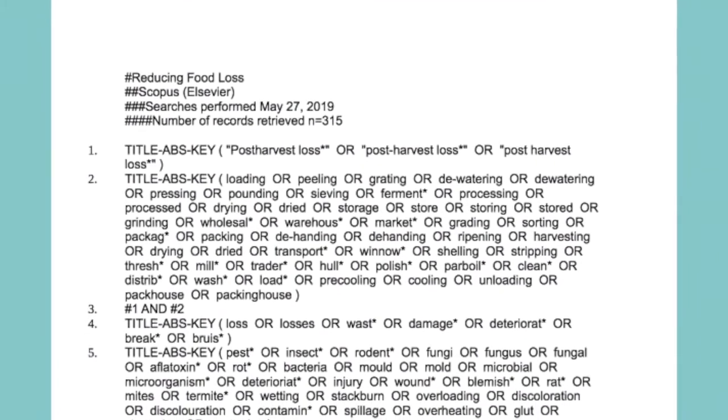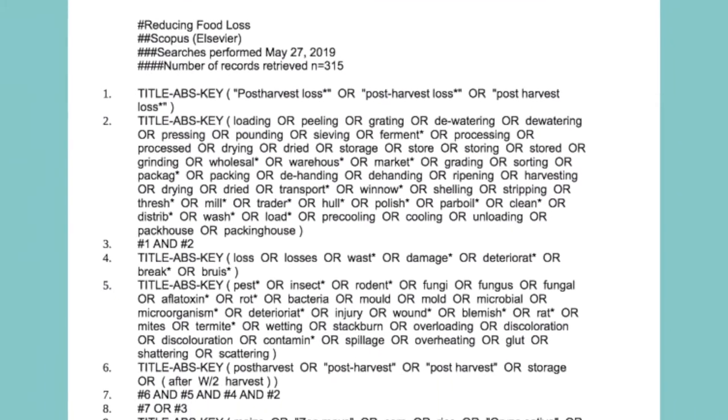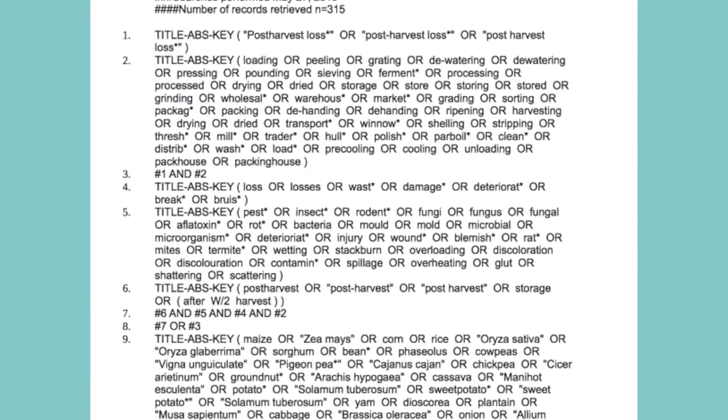Every decision that you make through the development of the systematic review — from the keywords that you use, the databases, the restrictions — all that has an impact on your end product. All the articles that you find or leave behind is going to shape your conclusions. If you think about the whole policymaking decision, a recommendation or a policy is going to be formulated using that evidence, so it has an impact if you're leaving things behind or excluding things because they're in a different language, from a different country, or published 50 years earlier.